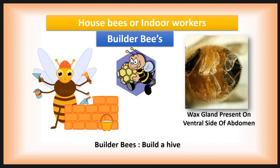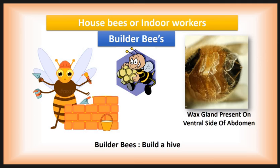Then the builder bee. Builder bees build the hive. They have a specialized gland called the wax gland situated on the ventral side of the abdomen. Builder bees secrete wax from the wax gland, chew this wax, and build the comb. The 12 to 17 days old worker bees perform this work.